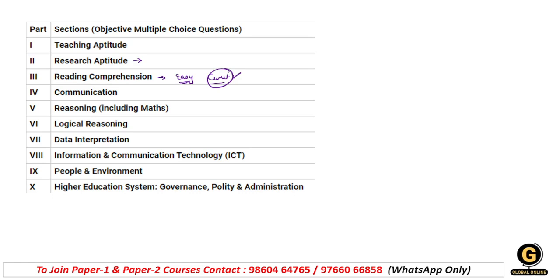Communication unit ki baat karte hain. Communication ke basic introduction mein se hi do questions yahan par puche gaye the. Uske alawa yahan par ek aur cheez add ki gayi thi - woh thi asynchronous and synchronous communication. Yeh bahut important hai. Phase 1 mein yeh topic sirf ek hi shift mein pucha gaya tha, is baar NTA ne wahi topic ko add kar diya hai. Aap log isko ek baar phir se revise kar dijiyega - khaaskar phase 3 aur phase 4 wale students zaroor usko padhkar jaiyega.